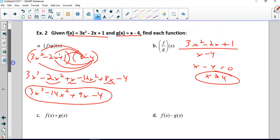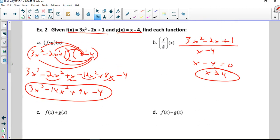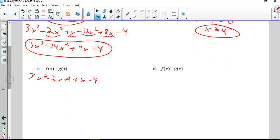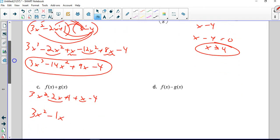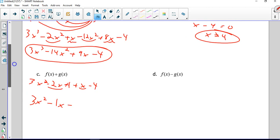f of x plus g of x. So 3x squared minus 2x plus 1 plus x minus 4. I'm just writing it without parentheses because I don't need it. So 3x squared is going to come down. Minus 2x plus x is minus x. And plus 1 minus 4 is minus 3.